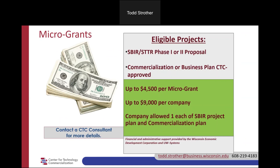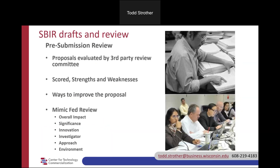Each company is allowed one of each microgrant, so be strategic about when you take advantage of them. We also convene pre-submission review panels. About three weeks before a major deadline, we invite clients to send their most up-to-date draft, and we run it through a mock panel review that mimics the federal review process. We score proposals, describe strengths and weaknesses, and provide constructive feedback. About two weeks before the deadline, we send results back so you can improve your proposal. This is a free service, typically done for NIH and NSF but available for other agencies too.